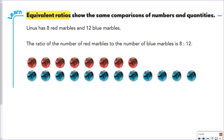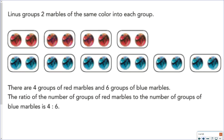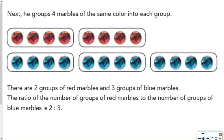So if Linus has 8 red marbles and 12 blue marbles, you could write the ratio of red to blue marbles as 8 to 12. But if you decided to look at the marbles in pairs, you could write a ratio that there are 4 pairs of red marbles to 6 pairs of blue marbles, and the actual number of marbles does not change. Or you decide to look at the marbles in groups of 4, so now you'd have 2 groups of 4 red marbles and 3 groups of 3 blue marbles, so your ratio would be 2 to 3.